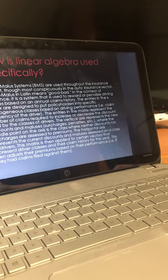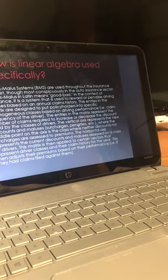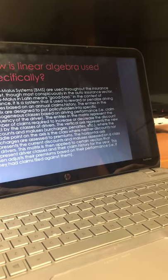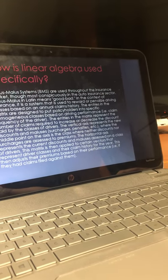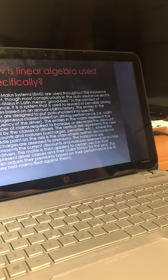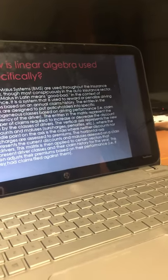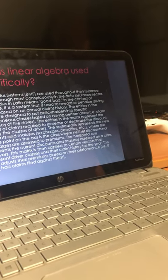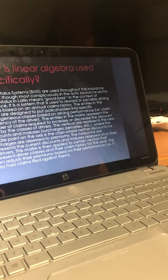The vertical axis represents the new discounts and maluses, surcharges, penalties, etc. Where the middle point on the axis is the class where neither discounts nor surcharges are assessed to premiums. The horizontal axis represents the current discounts and maluses assessed on a class of drivers.